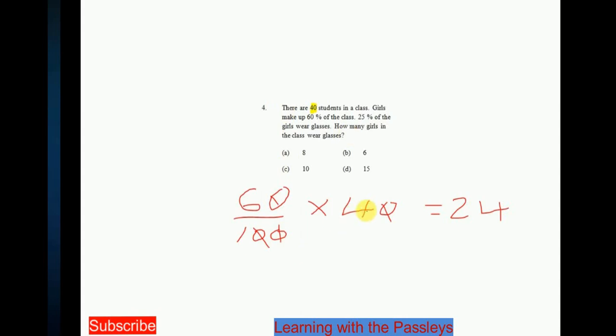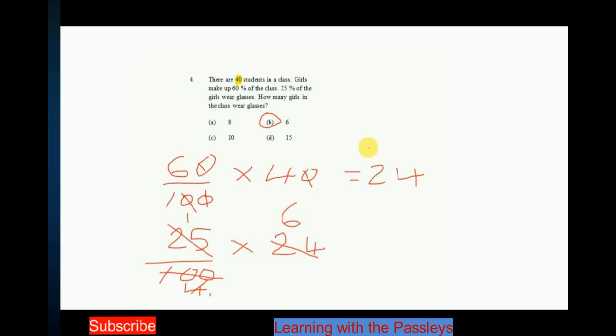Now that we know that 24 girls are in the class, we need to find out how many girls wear glasses. How to do that? 25 over 100. So we need to find out, they are saying that 25% girls wear glasses. Therefore, 25 over 100 is the same thing as 25% times how many girls in the class? 24. You see that? 25 into itself goes one time. 25 into 100 goes four times. 4 into itself goes one time. 4 into 24 goes six times. Therefore, B is our answer. Now I can tell you 6 girls in the class wear glasses. Therefore, B is our answer.